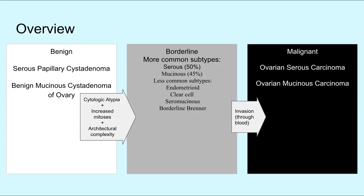A borderline ovarian tumor, or BOT, is a relatively uncommon epithelial ovarian neoplasm, characterized by increased cellular proliferation and the presence of slight nuclear atypia, but without destructive stromal invasion.